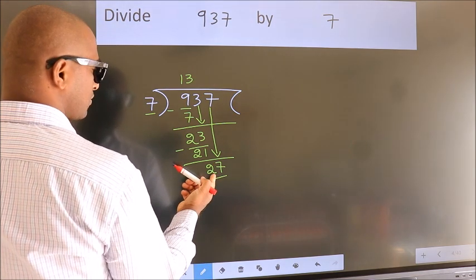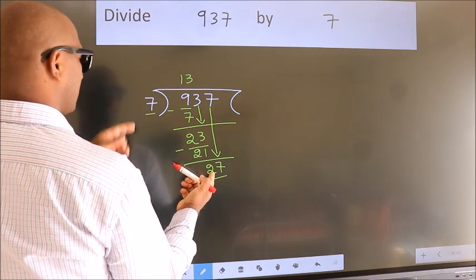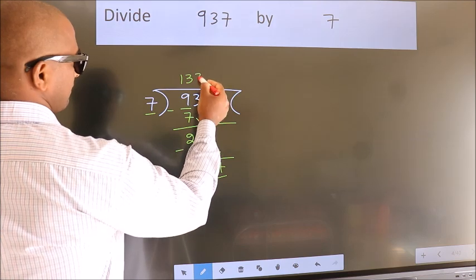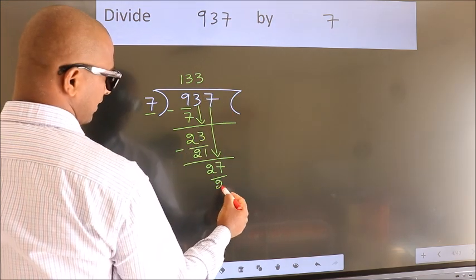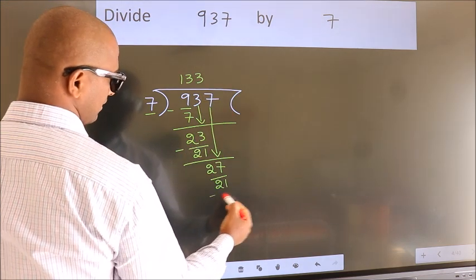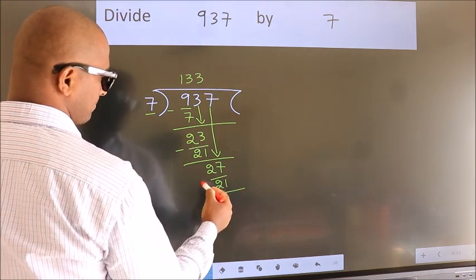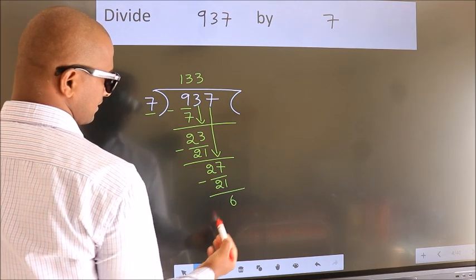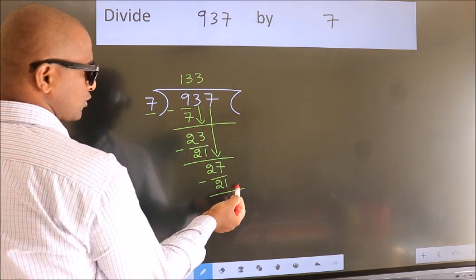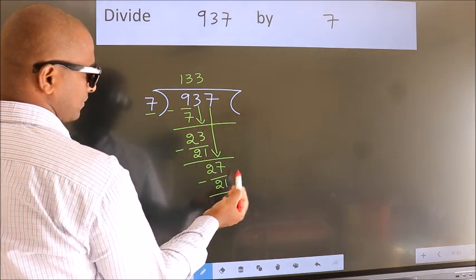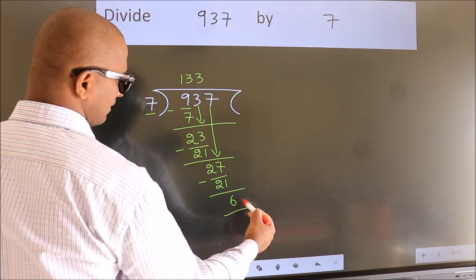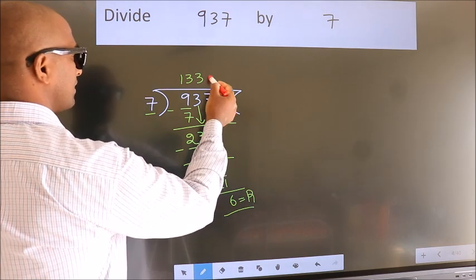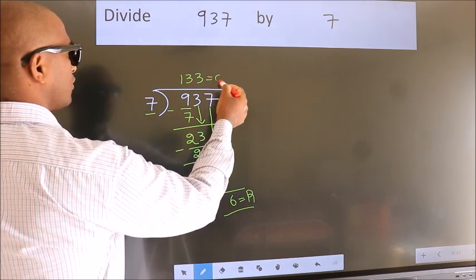A number close to 27 in the 7 times table is 7 threes 21. Now we subtract — we get 6. No more numbers to bring down, so we stop here. This 6 is our remainder, and this is our quotient.